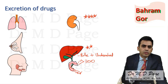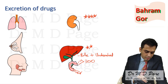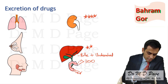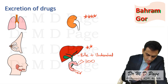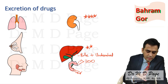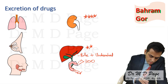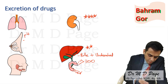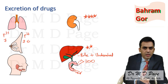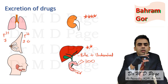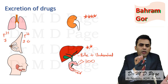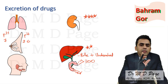Breast milk is not an important route of drug excretion, but it is important from the point of view of the neonate, because the neonate can ingest breast milk and the drug can reach the neonate. Almost all drugs will reach milk. What you have to know here is that the pH of the blood is 7.4 and the pH of milk is 7.0 — so milk is acidic. If a drug is basic, it will reach the milk.